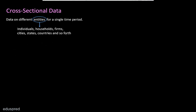What is going to be an entity in a particular question depends on what we are talking about. The main thing to keep in mind is that when we are dealing with cross-sectional data, we have different entities — so entities are allowed to vary — but the time period is not allowed to vary. That is, we have a single time period.